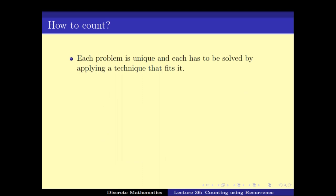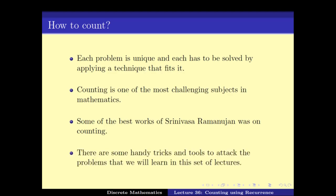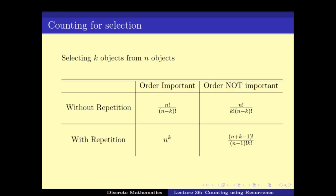The problem with counting is that every problem is unique and requires a different technique to solve it. It is one of the most challenging subjects in mathematics. Some big names like Srinivasa Ramanujan also worked on counting, and there are some handy tricks and tools to attack these problems, but they are just small tools. One particular special case is: how many ways can we select k objects from n objects?